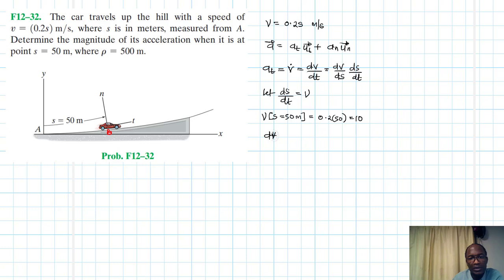dv/ds, which is just equal to our dv... I mean our v, which is 0.2s like so. This is equal to just a 0.2.